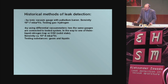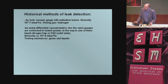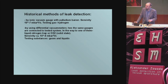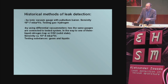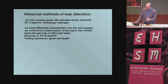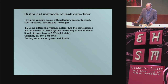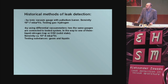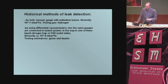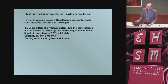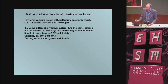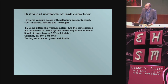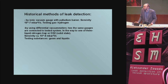Another method: using an ionic vacuum gauge with a palladium barrier. Palladium is a metal through which hydrogen can diffuse. So if we heat a plate of palladium and use hydrogen as the testing gas, we can observe higher and higher pressure during testing of an apparatus with a leak. Sensitivity is 10⁻⁷ millibar·liter per second. It is a dangerous method because of the risk of explosion.